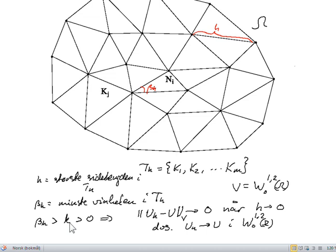If we imagine this, then it is possible to show that the finite element solution converges to the actual solution in W_0^{1,2} for the Dirichlet problem.